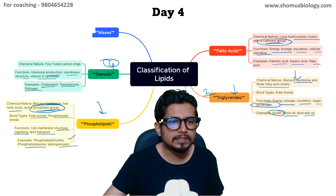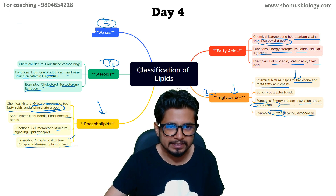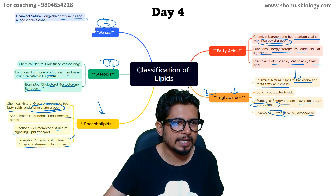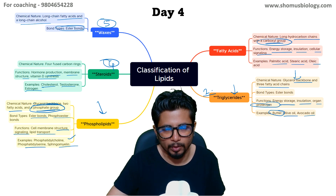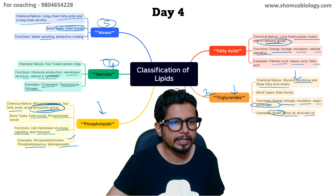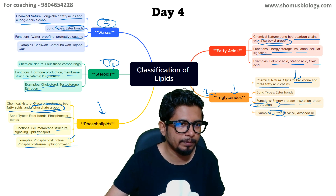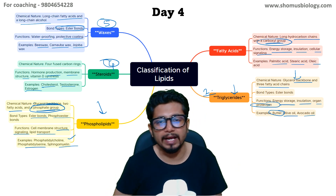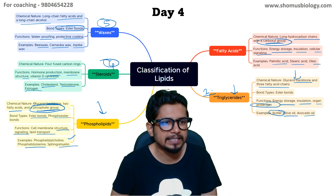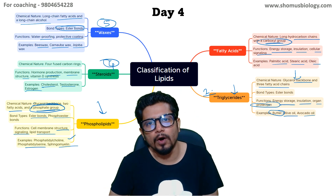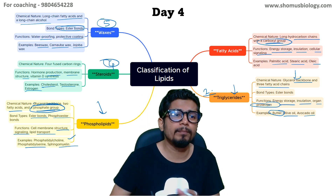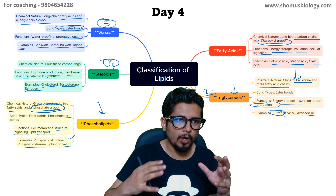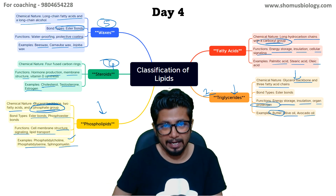The fifth and last category of lipids is waxes. By chemical nature, long-chain fatty acids and long-chain alcohols are linked together via ester linkage. Their function includes waterproofing, protecting, and coating. Examples include beeswax, jojoba wax, and carnauba wax — generally produced by plants to provide a coating on the surface of leaves and plant surfaces. Waxes are a complex type of lipid because they have long fatty acids and a long chain of alcohol linked together.